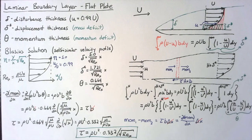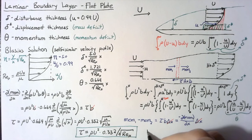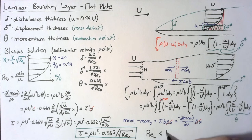One final thing to keep in mind is that we assumed from the start that this was a laminar boundary layer. The Reynolds number for a fully laminar flat plate has to be less than 5 times 10 to the fifth. Past this point, the flow becomes turbulent and the Blasius solution that we came up with here no longer applies. But for laminar flow at least, we have the shear stress.